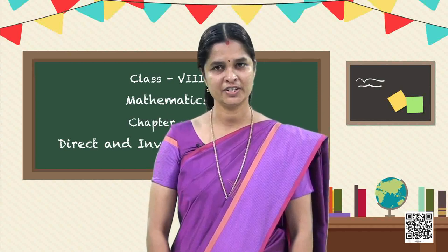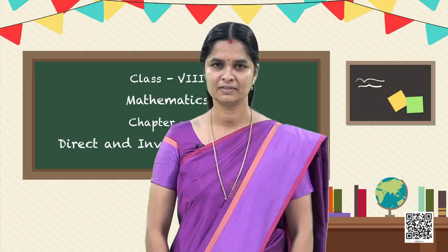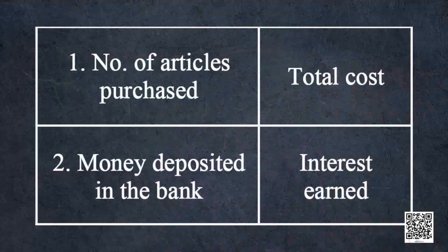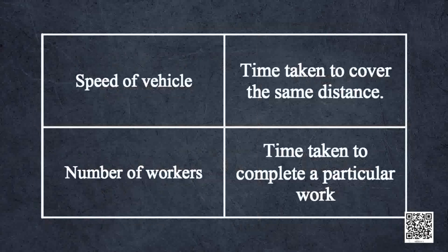Where? In variation in one quantity bringing variation in the other. Can we list some more examples? Number of articles purchased and the total cost; money deposited in the bank and the interest earned — in both these cases, when one quantity increases or decreases, the other quantity also varies in the same way. Now look at these examples: speed of a vehicle and the time taken to cover the same distance; number of workers and the time taken to complete a particular work — in both these cases, when one quantity increases, the other quantity decreases.